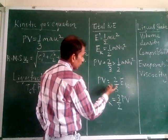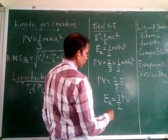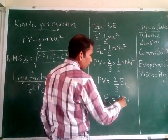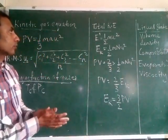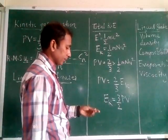This part in the equation is nothing but Ek. So Ek will equal—this will go on that side as reciprocal 3 by 2. We will get Ek equals 3 by 2 PV. This is the equation for total kinetic energy.